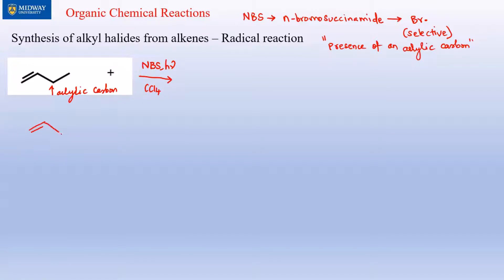Let's redraw this. We've got two hydrogens on the allylic carbon. One of the Br• radicals reacts with the C–H bond, which gets broken in two equal pieces — one electron stays with the carbon, the other goes with the hydrogen.